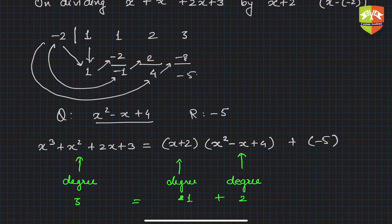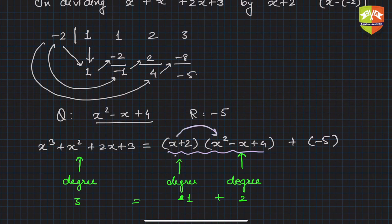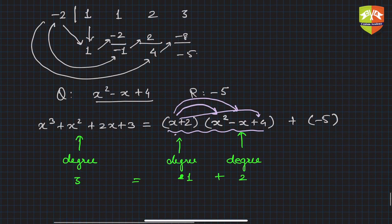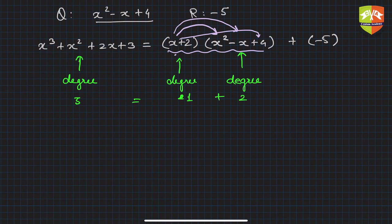This will always be the case. To justify it: if you open the bracket and multiply, the first and highest-degree term you get is x times x², giving x³. All other multiplication terms will have lesser powers of x. So the highest power after expanding is x³, which matches the degree of the dividend.